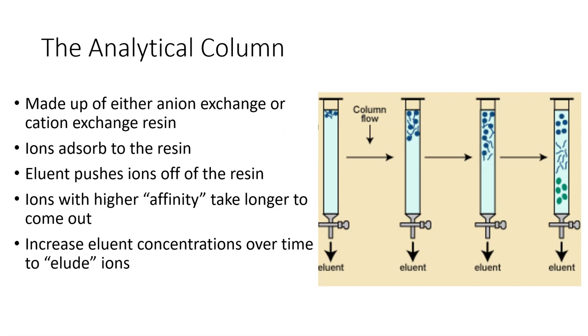The analytical column is the heart of ion chromatography. It's made up of either anion exchange or cation exchange resin. This causes ions to adsorb to the resin, and then eluent pushes the ions off of the resin. So ions with a higher affinity will take longer to come out. And what this affinity means is how stuck to the resin is this ion.